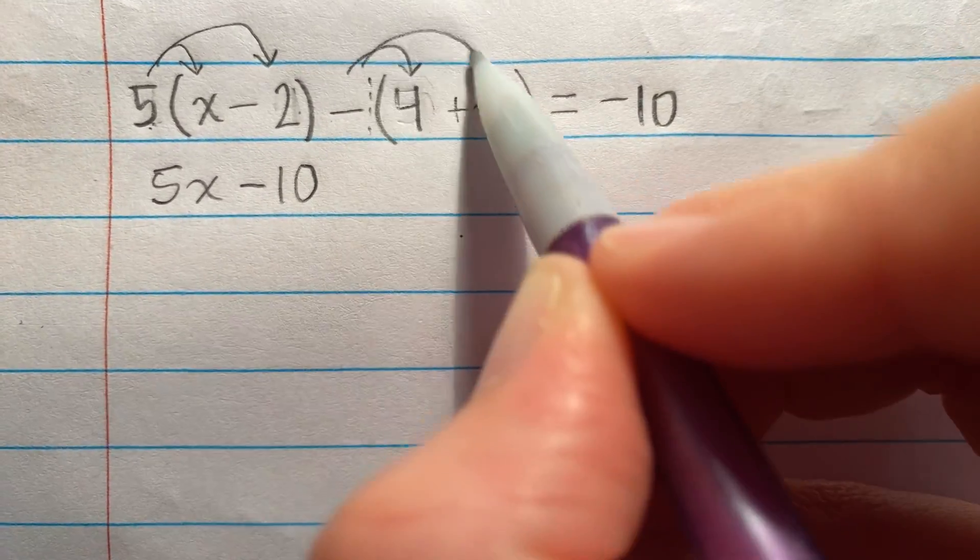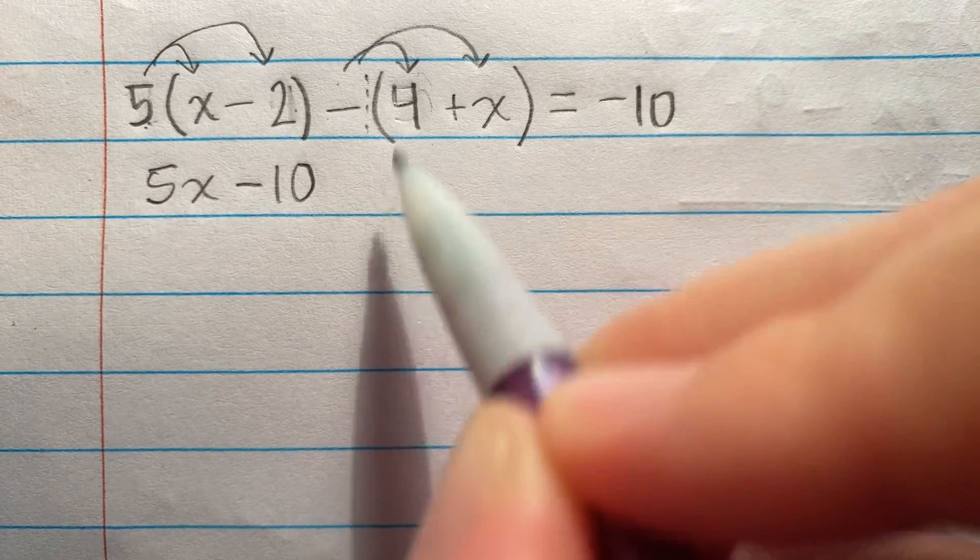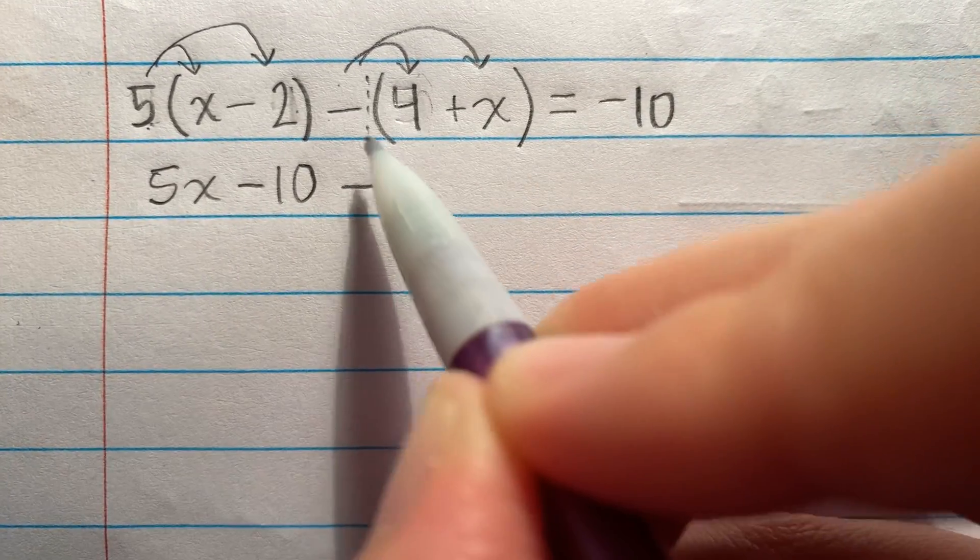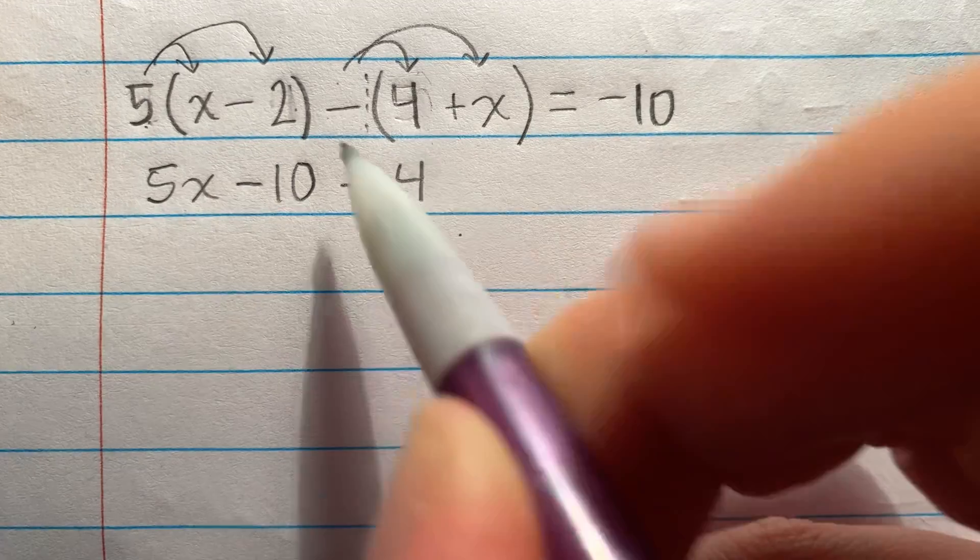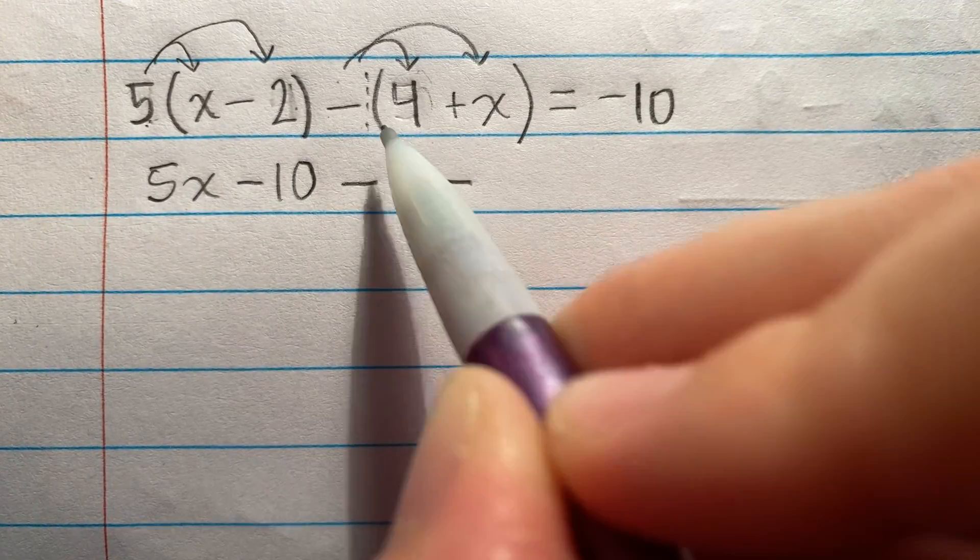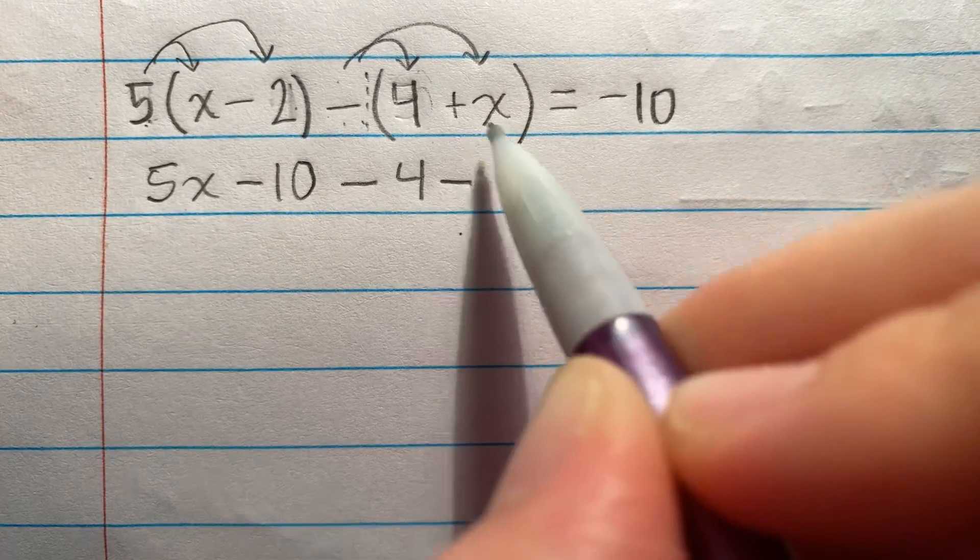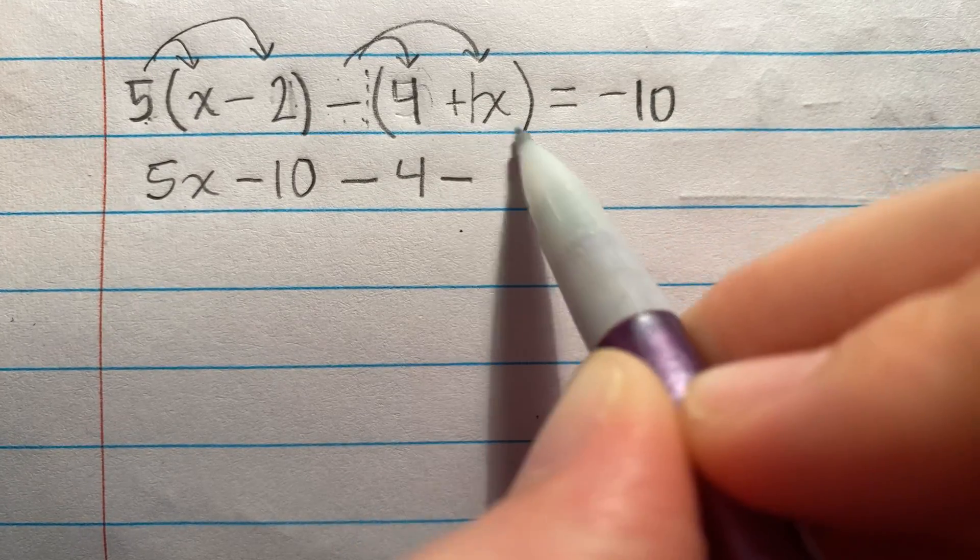I'm going to do negative 1 times 4. So negative times positive is negative. 1 times 4 is 4. Negative times positive is negative. Then this is negative 1 times 1x. So what's 1 times 1?